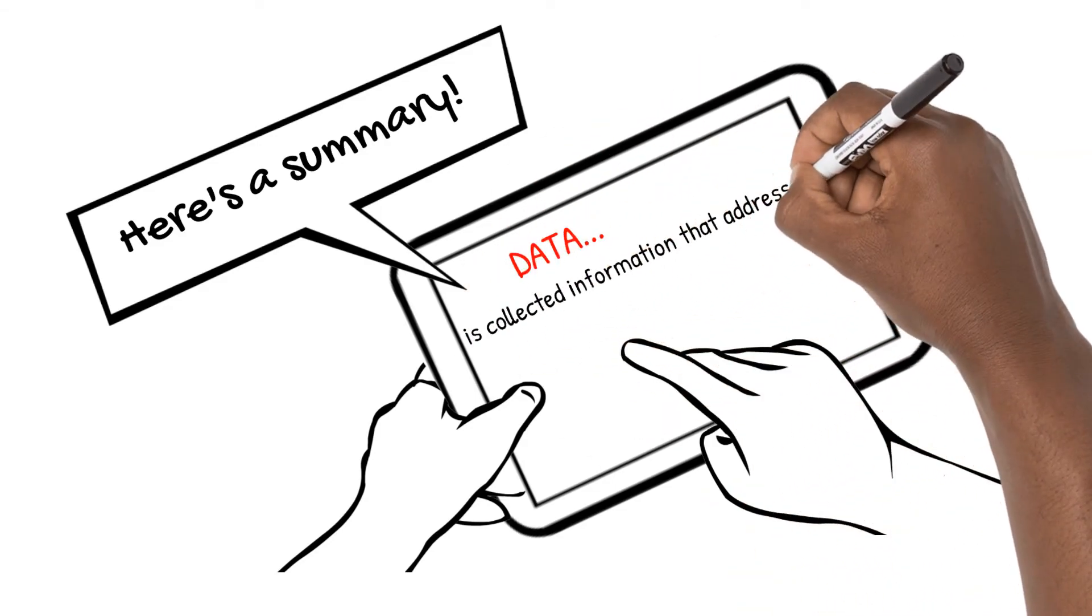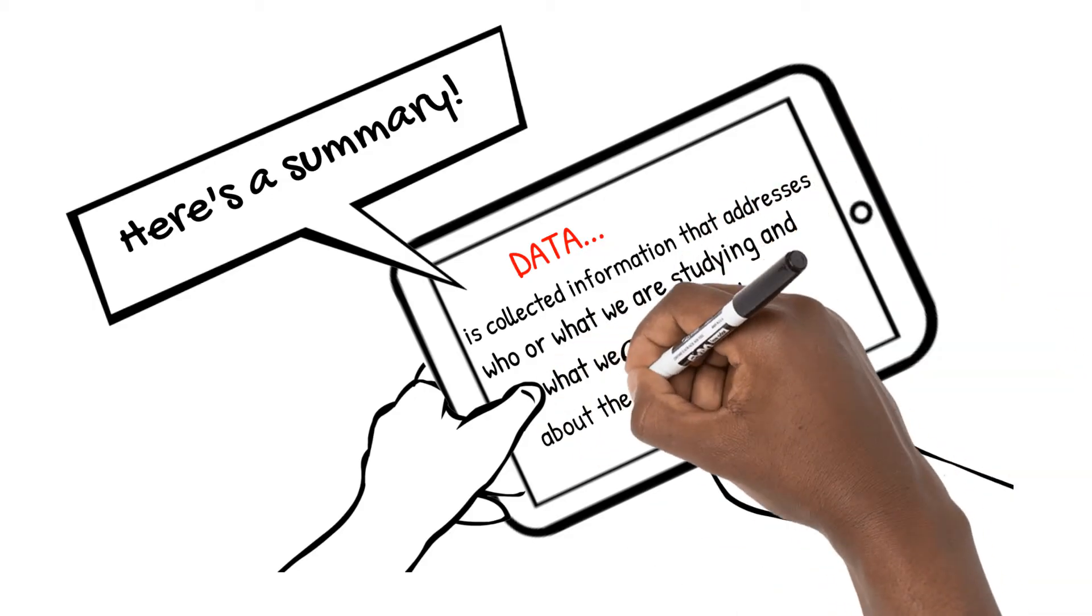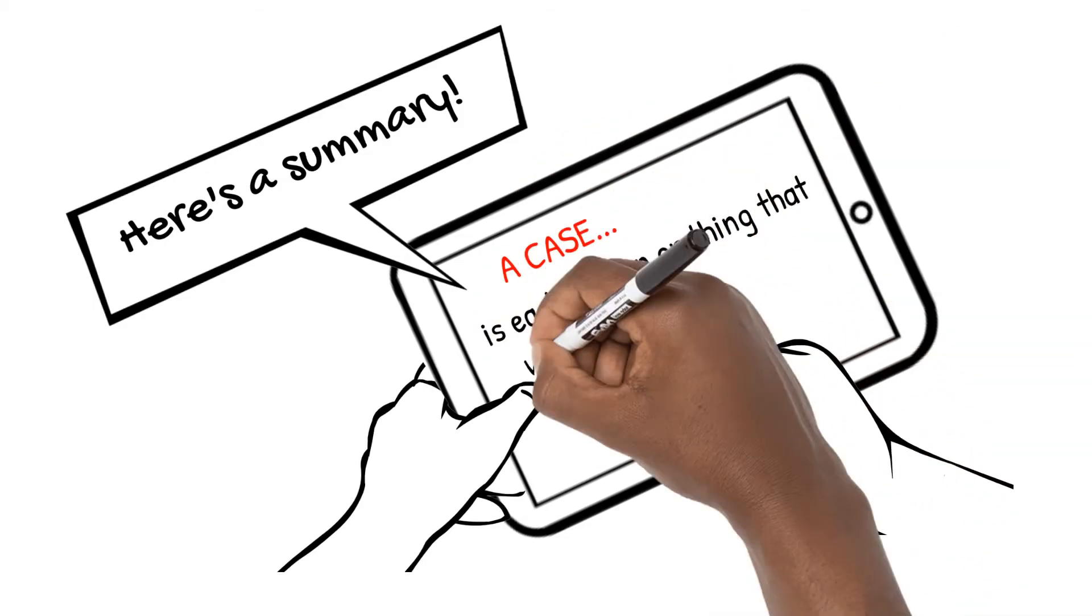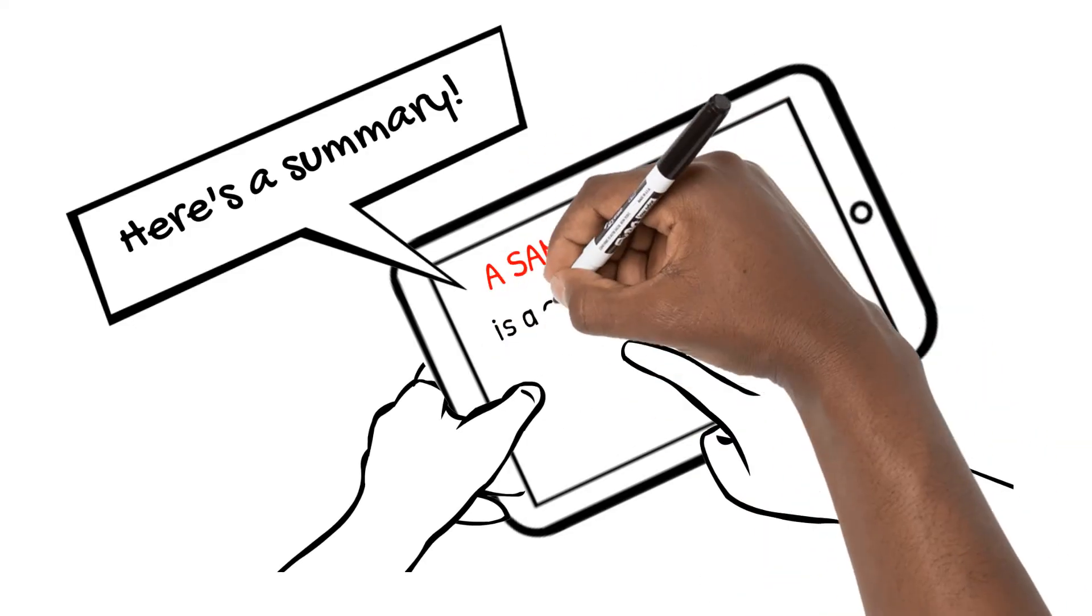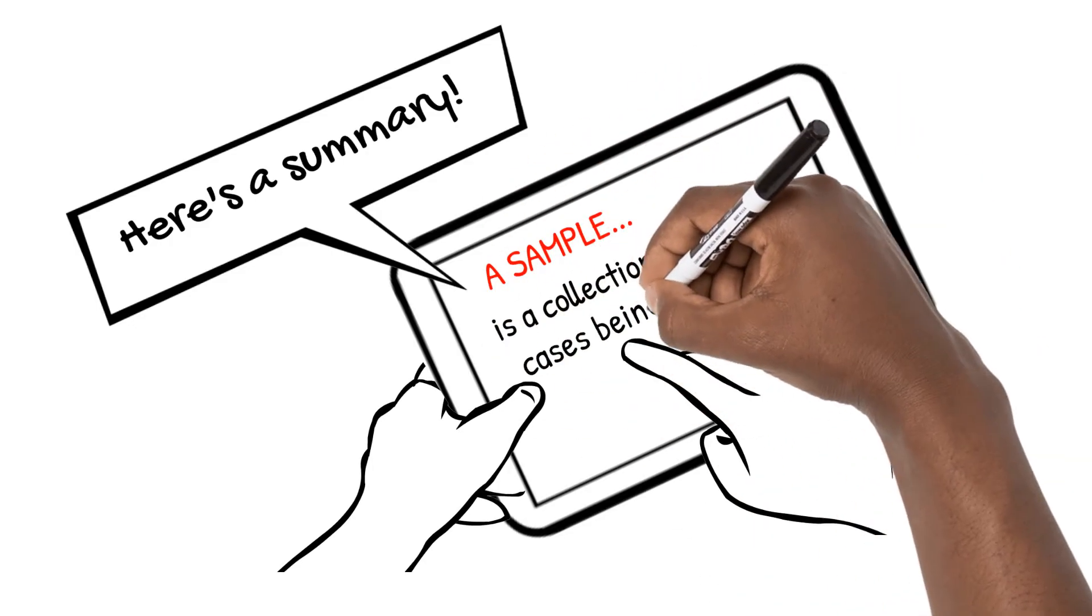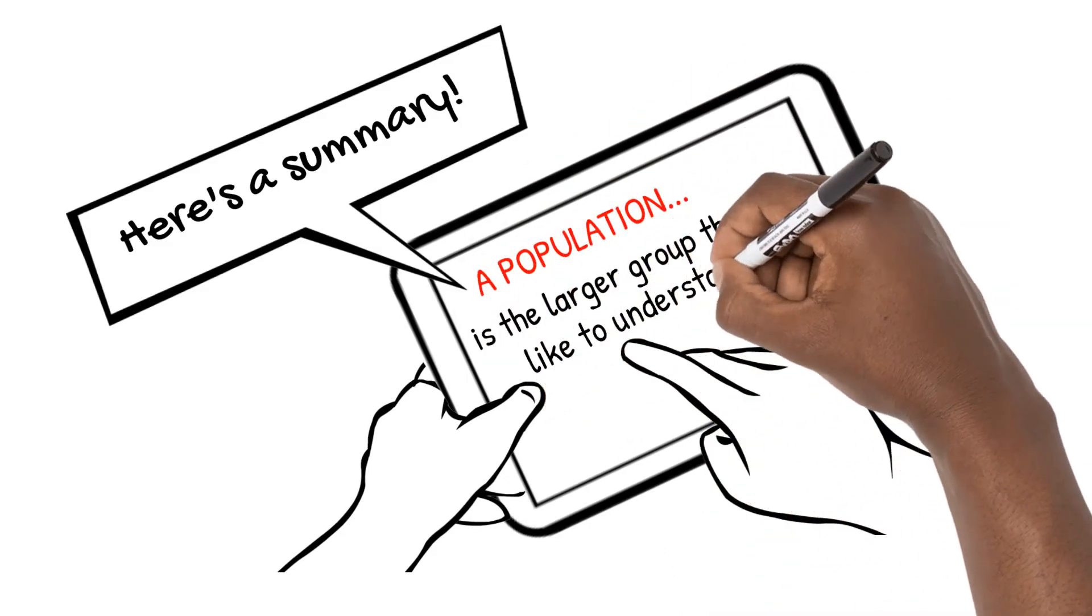Data is collected information that addresses who or what we are studying and what we want to know about them. A case is each person or thing that we are studying directly. A sample is the collection of all cases being studied, and a population is the larger group that we'd like to understand.